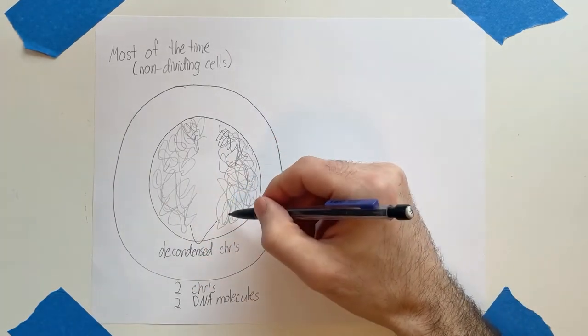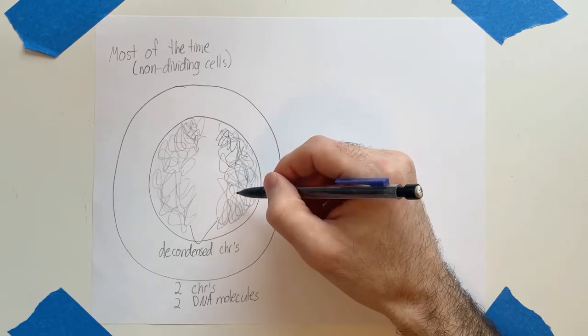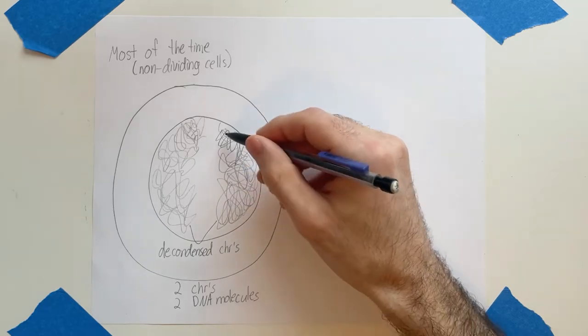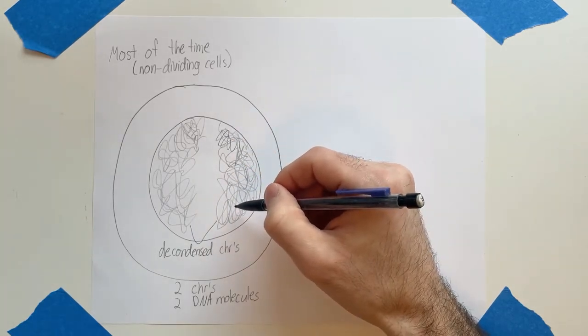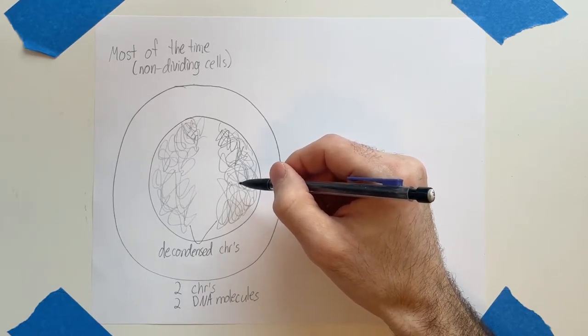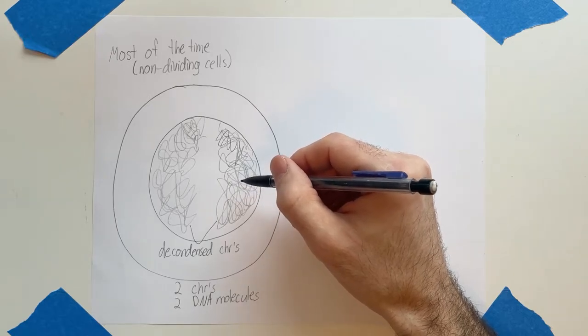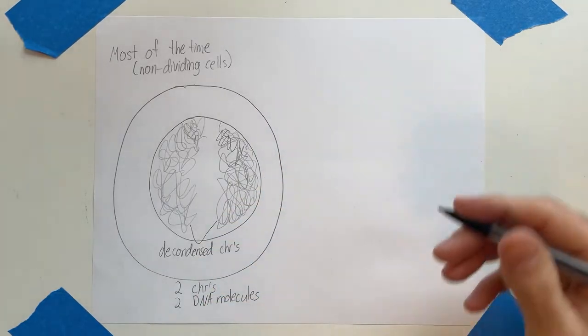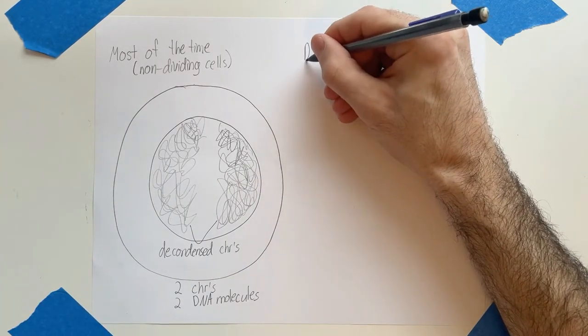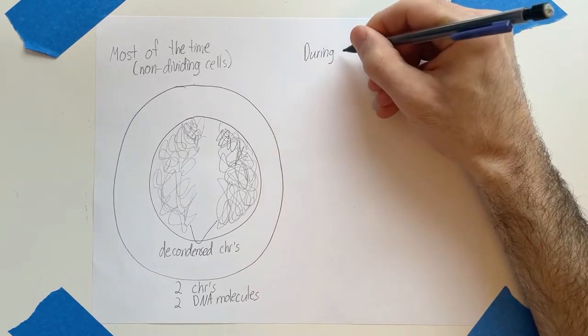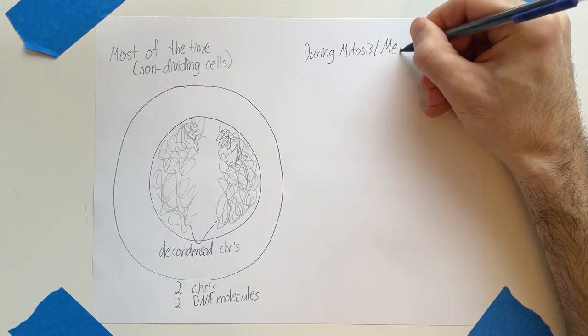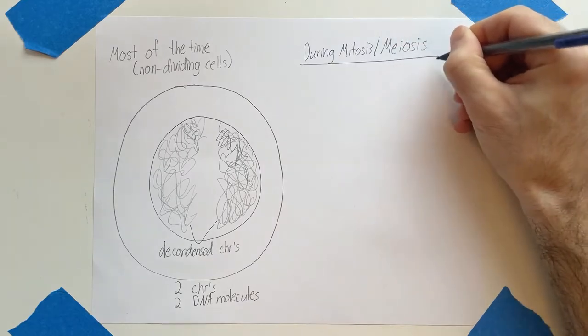Now, during cell division, chromosomes and their DNA get moved. So the reason that chromosomes package DNA like this into the chromosome structures that we're used to seeing is for the purpose of moving them into the two daughter cells. So it's basically to make them easier to move during cell division. And that's what we'll look at next. So let's look at what chromosomes look like during cell division, either during mitosis or meiosis.